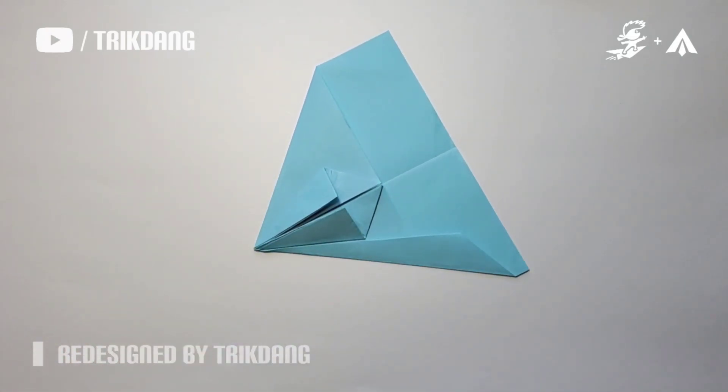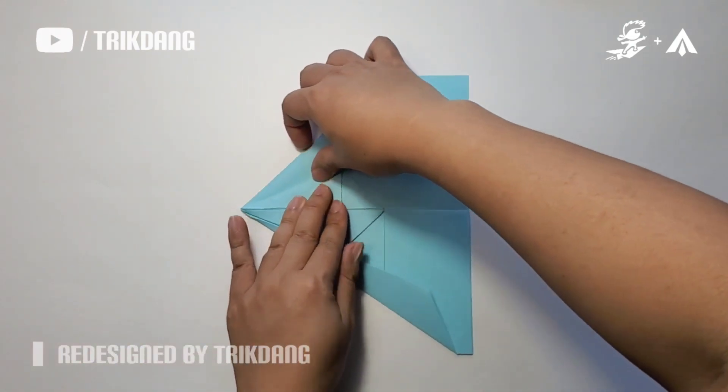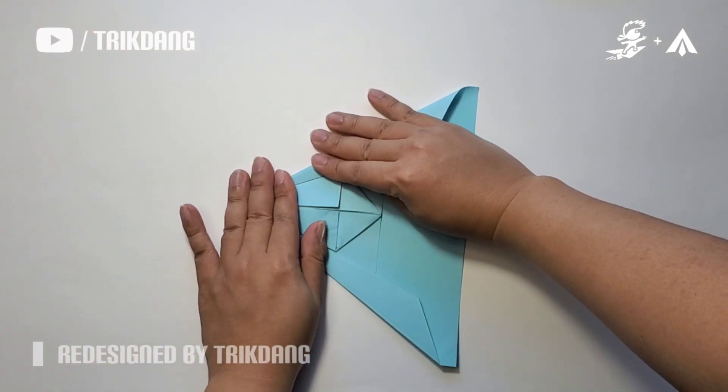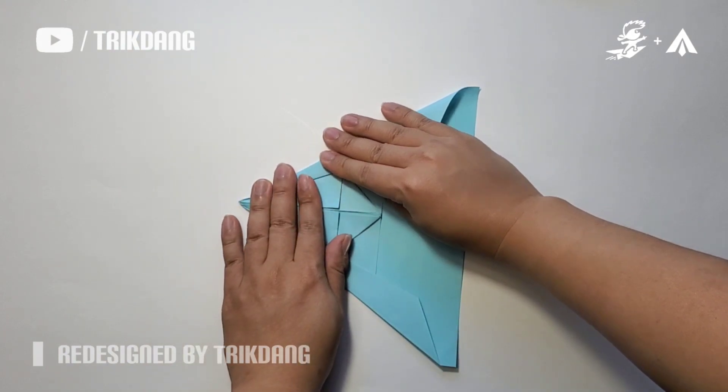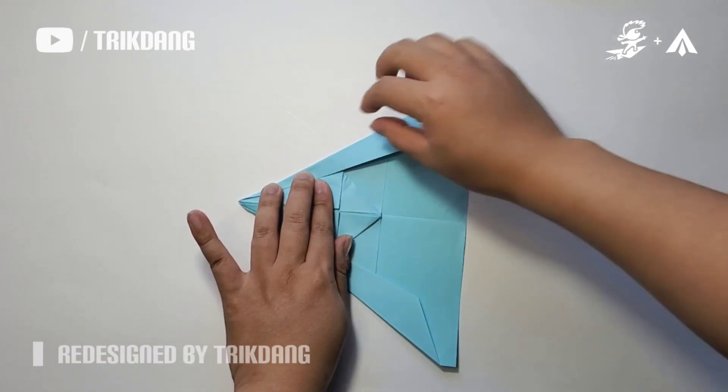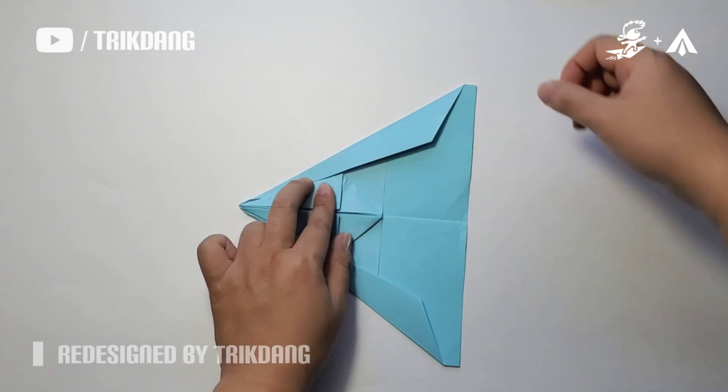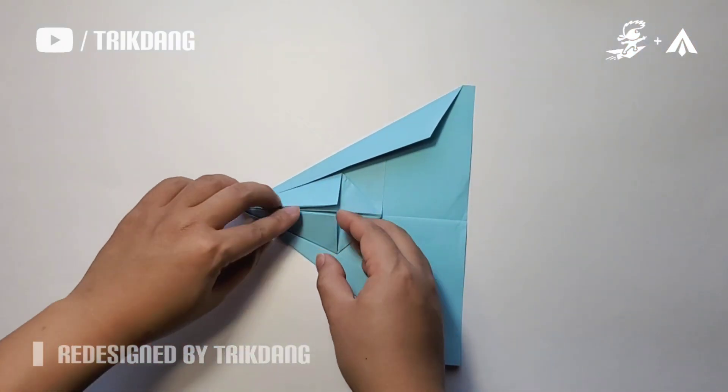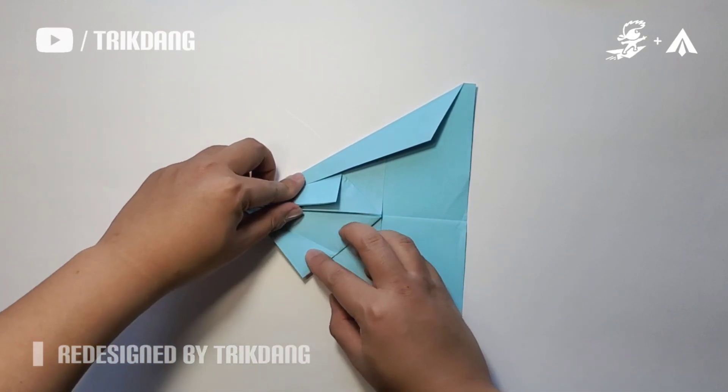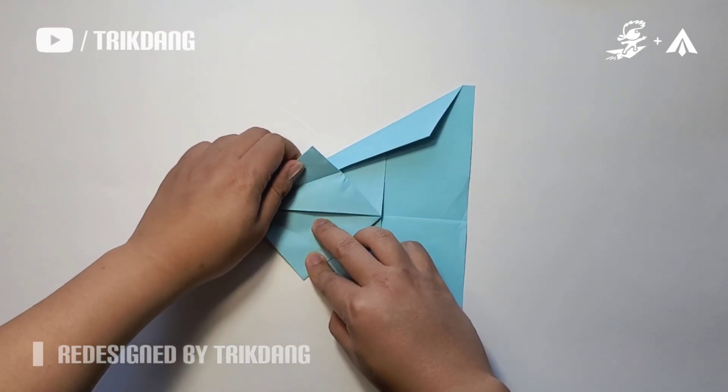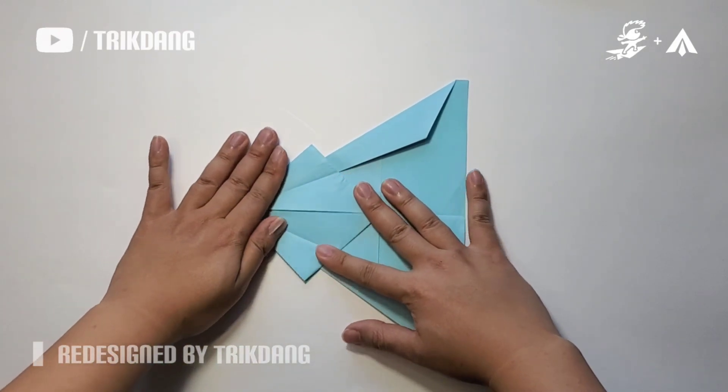Repeat the same fold for the opposite side. On the following step, just unfold this part of the paper. Same thing from here.